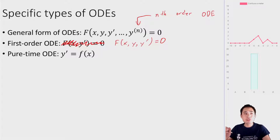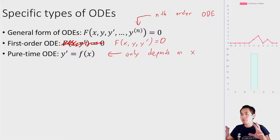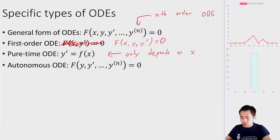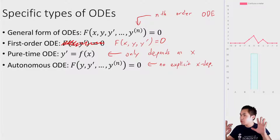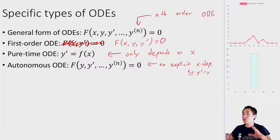We also have autonomous ODEs, which have no explicit dependence on x. For example, y′ = y is autonomous because even though x is still present in the derivative, there's no direct x in the equation. The x only appears inside the derivatives. So the autonomous first-order form can be rewritten as y′ = f(y), where the first derivative is a function of y only and there's no explicit x dependence.